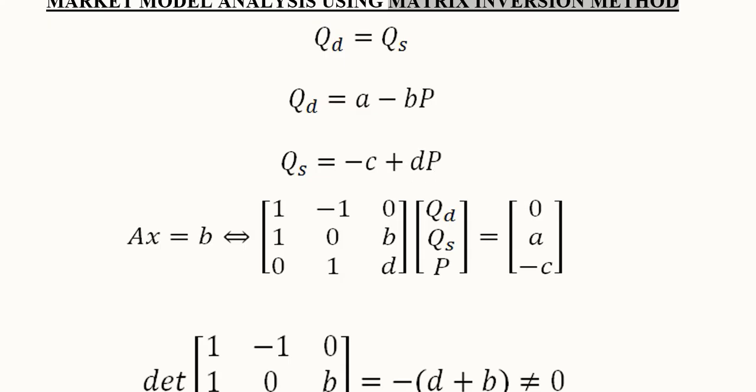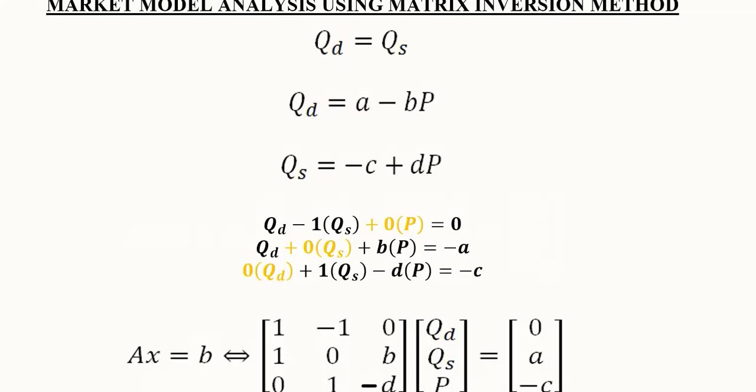We have mentioned the equations in a more elaborated way as you can see in the orange color. The term which was missing in this first equation is mentioned, that is the term containing price. In this second equation Qs was missing so we created its place as well, and here Qd was missing in the third equation and we created its place as well.